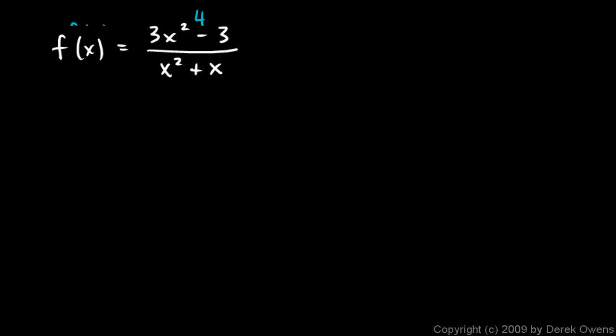Here's another example. f(x) is 3x squared minus 3 over x squared plus x. We're told to use limit notation to describe the behavior of the function as x grows without bound, in other words as x approaches infinity. In this case, we're going to have a horizontal asymptote again. You might be able to tell just by looking that the horizontal asymptote will be at y equals 3. Sometimes people abbreviate that HA — horizontal asymptote — at y equals 3. How do we know that?